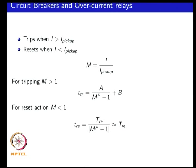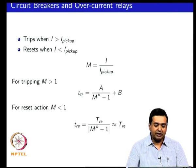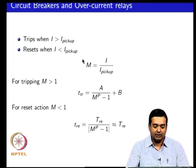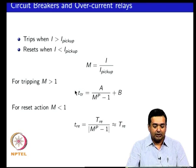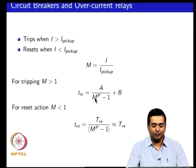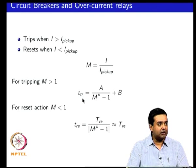If you look at the circuit breaker, you have equations that model both its tripping characteristic and its reset action. It trips whenever the current flowing through the breaker or the overcurrent relay is greater than the pickup current. When the ratio m becomes larger than 1, it initiates a tripping action, and the time required to trip depends on the value of this ratio m. The larger m is, the shorter the time required to trip.